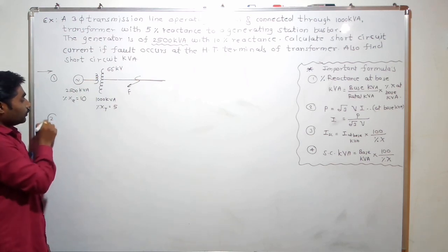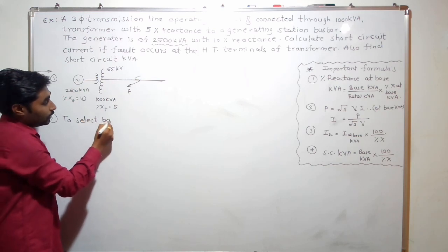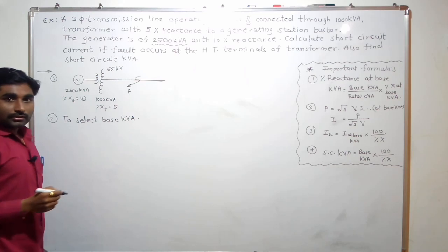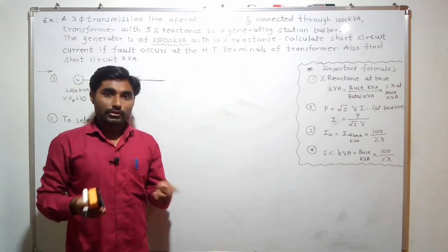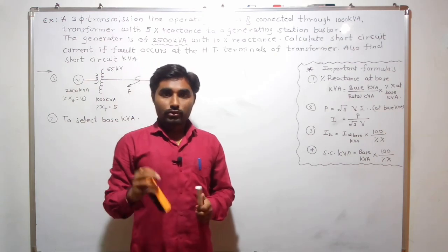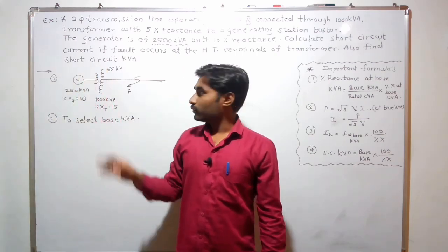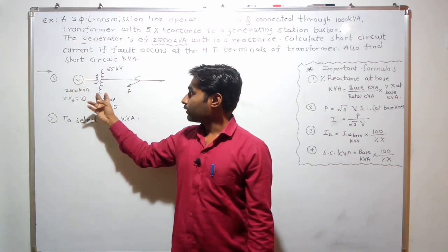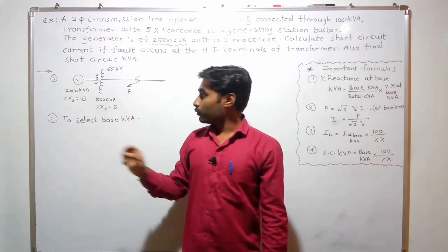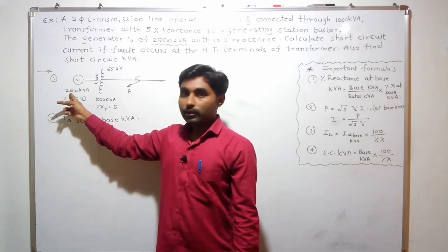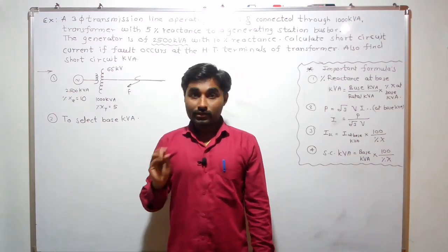The next step, the second step, is to select the base kVA. There are three methods to select the base kVA. First, we can add the kVA ratings of all components in the circuit — generator is 2500 kVA and transformer is 1000 kVA, giving 3500 kVA. Second, we can choose the largest kVA rating of any component, which is 2500 kVA from the generator.